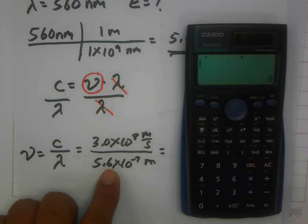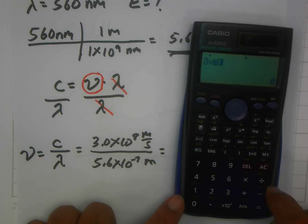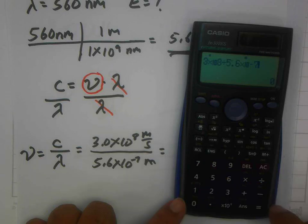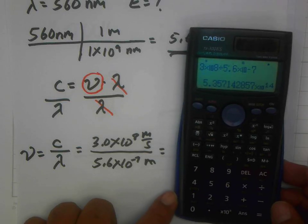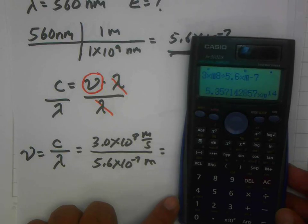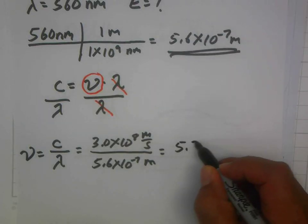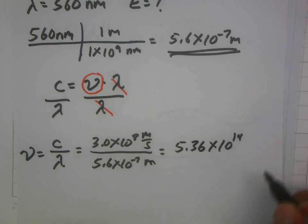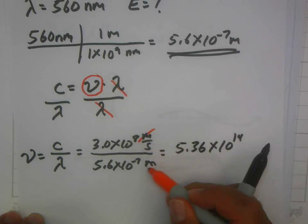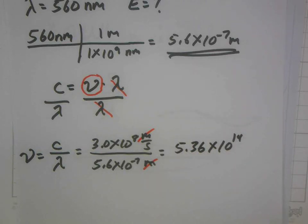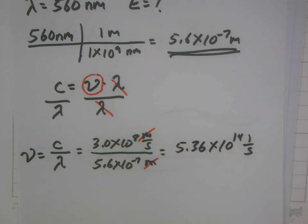So now if I take 3 times 10 to the 8th, divided by 5.6 times 10 to the negative 7th, I'm going to end up with 5.36 times 10 to the 14th. And you'll notice that our units' meters cancel out. It leaves us with 1 over second, which is frequency units per second. So that's our frequency.